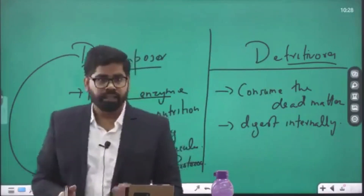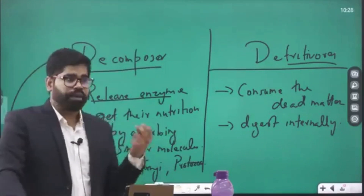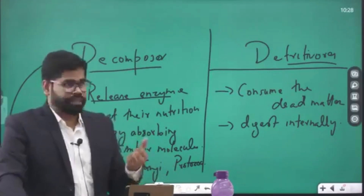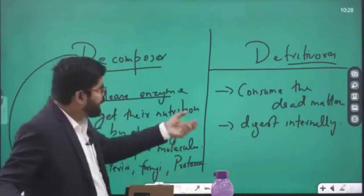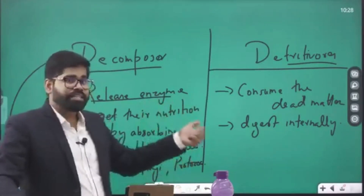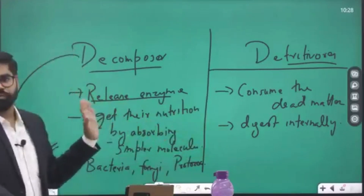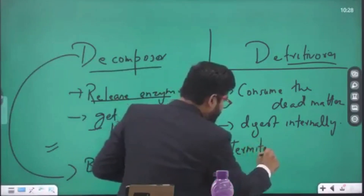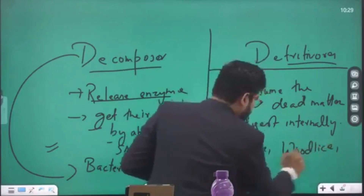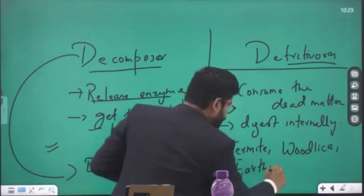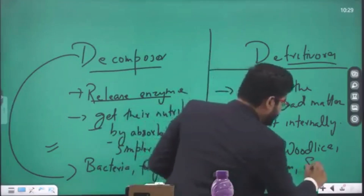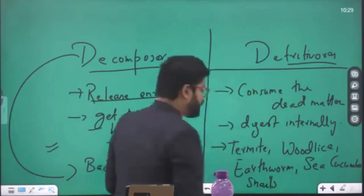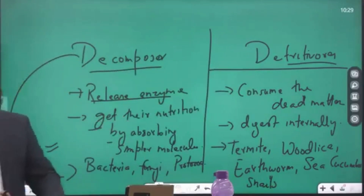Detritivores are relatively bigger organisms — not like lions and tigers, but relatively bigger. Examples include earthworms, sea cucumber, and snails, among others. More examples of decomposers and detritivores will also be available in additional resources.